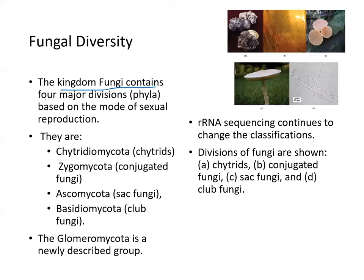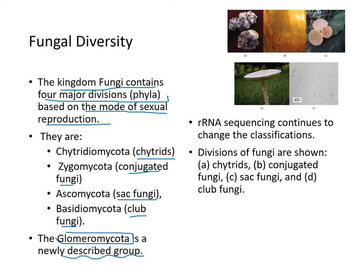The kingdom of fungi contains four major divisions or phyla, classified based on mode of sexual reproduction: chytrids, conjugated fungi, sac fungi, and club fungi. Glomeromycota is a newly identified group. Ribosomal sequencing continues to change classification within this group.